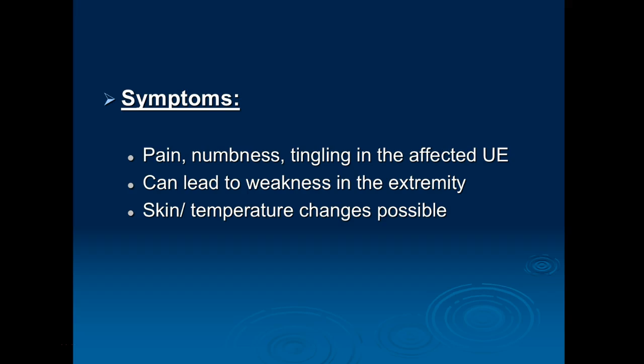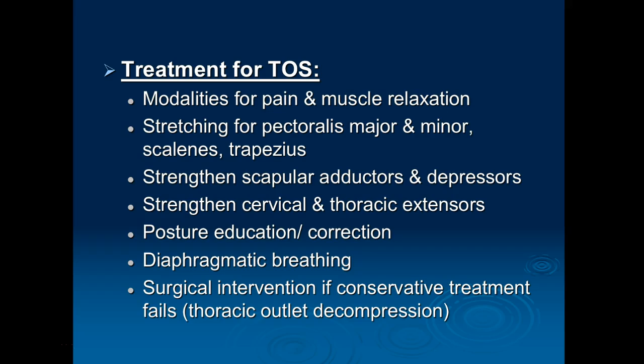Treatment can always include modalities for pain and muscle relaxation, focused on the tight muscles. Definitely a lot of flexibility exercises emphasizing all pectoral muscles, major and minor. The scalenes are really hard to stretch on your own, so a manual technique in class will demonstrate how to stretch those out well — and remember the scalenes actually attach to the first rib, so stretching them can also help improve the patient's overall respiration. The upper trapezius tends to be very tight. Strengthening will focus on the scapular adductors and depressors. Since this person likely has forward shoulders and increased thoracic kyphosis, the posterior spinal muscles are stretched and weak and will need strengthening — including the cervical and thoracic extensors.